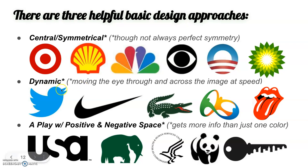The next approach is dynamic — and I want you to sketch both ways because they feel very different. Dynamic logos like Twitter, Nike, the Rolling Stones, or the Rio de Janeiro Olympics logo are all about moving your eye through the image. They avoid horizontals, verticals, and perfect circles because they don't want to trap your eye. Instead, diagonals and curves are the way to move the eye through.